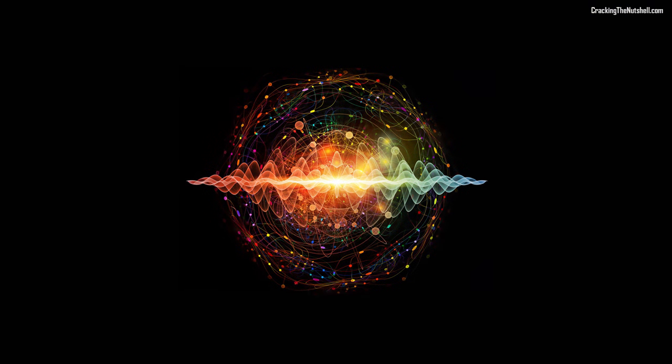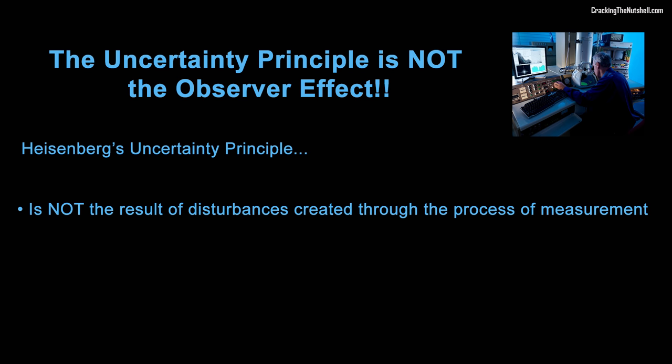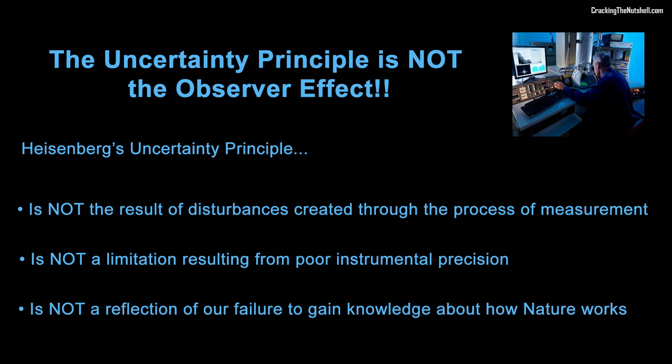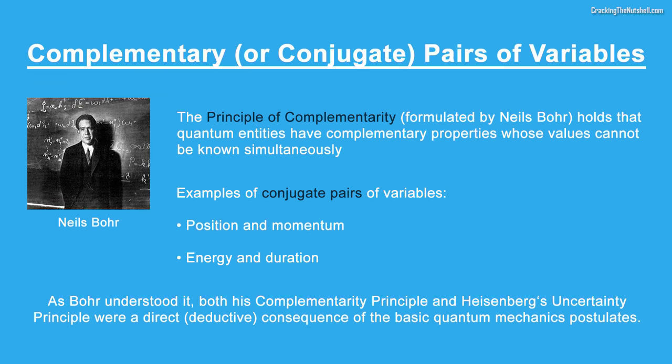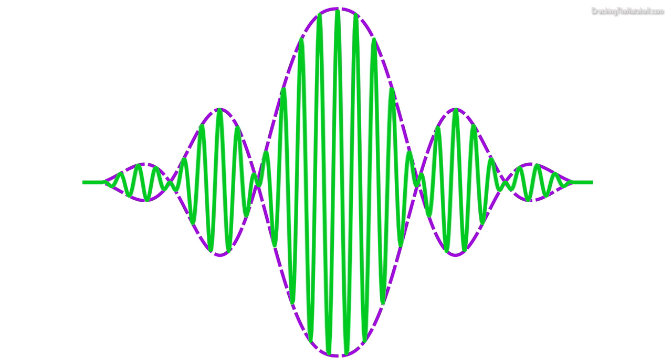The uncertainty principle is a result of profound importance in quantum mechanics. Let me emphasize something. Contrary to popular belief, and to what some books or teachers might tell you, Heisenberg's uncertainty principle is not the result of disturbances created through the process of measurement. Neither it is a limitation resulting from poor instrumental precision, nor it is a reflection of our failure to gain knowledge about how nature works. No, none of that is true. The uncertainty principle is in fact a result which can be derived theoretically from the fundamental principles of quantum mechanics, principles which describe an inherent indeterminacy in the relationship between certain pairs of complementary variables, such as position and momentum. The uncertainty principle is inherent in the properties of wave-like systems, and since quantum mechanics describes quantum entities as probabilistic waves, indeterminacy naturally arises. More on this later in another video.